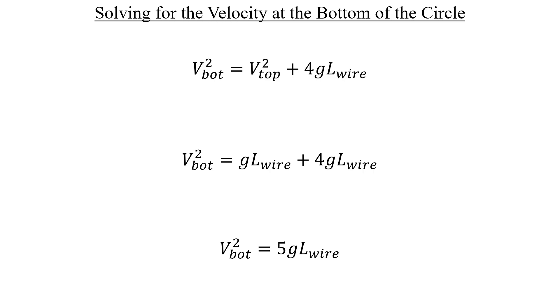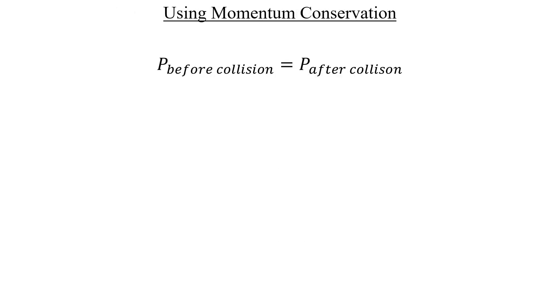On to the momentum next. Before the collision, all the momentum comes from the dart, since the sphere isn't initially moving. After will account for the momentum of both objects combined. And here's what that looks like.